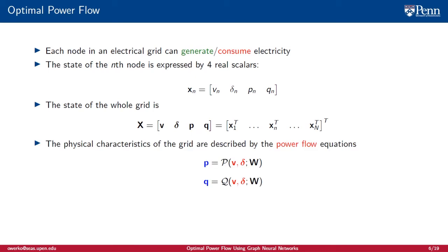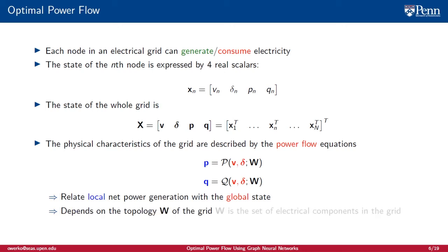The physical characteristics of the grid are described by the power flow equations. To solve them is to solve the power flow problem I mentioned earlier. They relate the local power generation with the global state, and they depend on the topology of the grid, a set of all electrical components, and the grid.